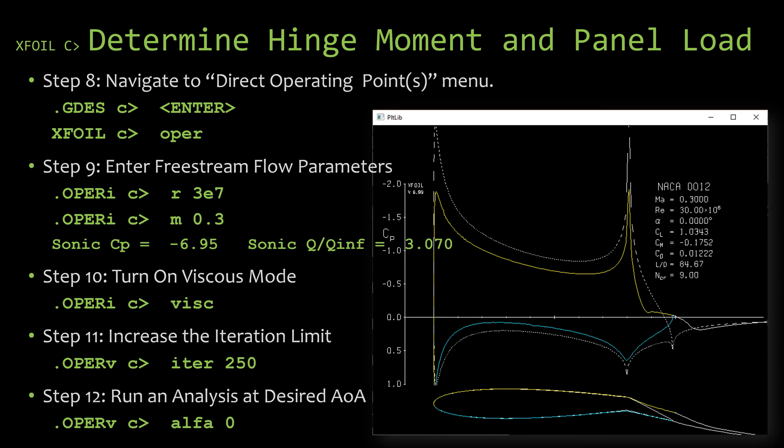Now that we've added the flap to the airfoil, let's navigate to the operating points menu so we can start using it. We left off in the GDES menu, so we're going to hit enter to go up to the X-Foil menu, then type in 'oper' to go down into the operating menu.